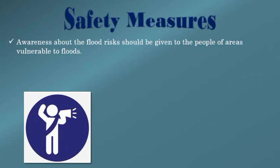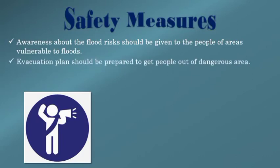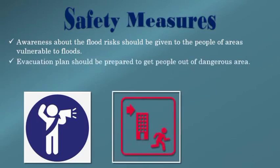Awareness about the flood risk should be given to the people of areas vulnerable to floods. ان علاقوں میں جہاں پر بہت زیادہ سیلاب آتا ہے ان لوگوں کو flood risk کے بارے میں awareness دینی چاہیے — جب flood آئے تو انہیں کیا کرنا چاہیے، گھروں میں رہنا چاہیے، پانی میں نہیں جانا چاہیے، بجلی کے poles سے دور رہنا چاہیے اور electricity cut کر دینی چاہیے۔ ہمیں انہیں یہ بتانا چاہیے کہ سیلاب آنے پر وہ اپنے آپ کو اور اپنی property کو کیسے بچائیں۔